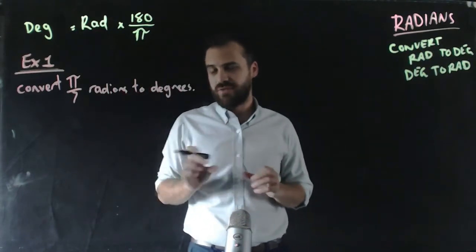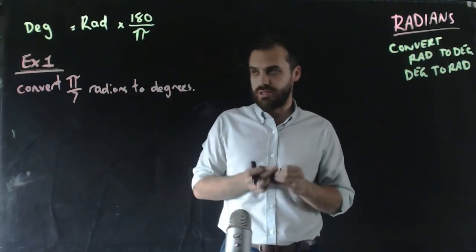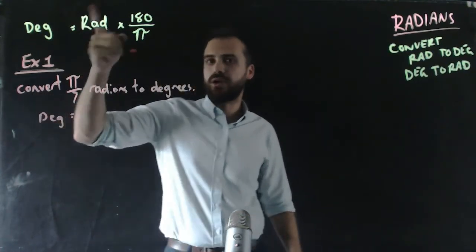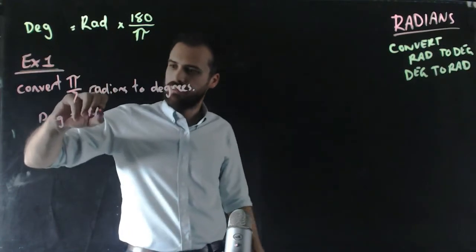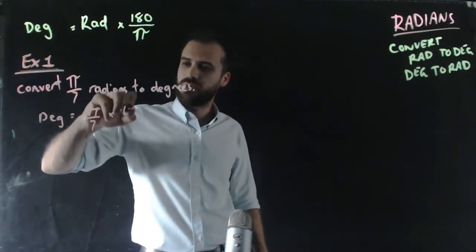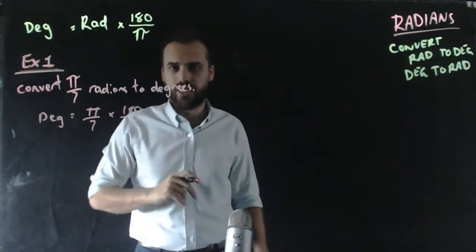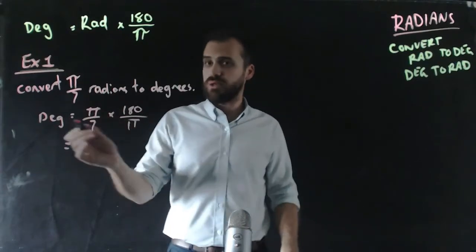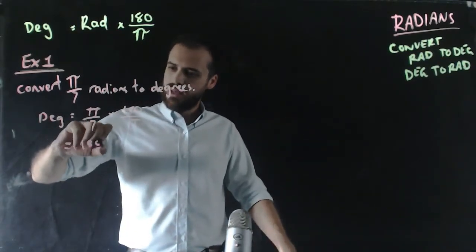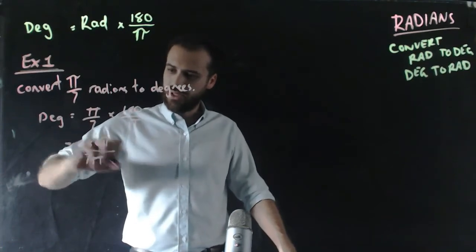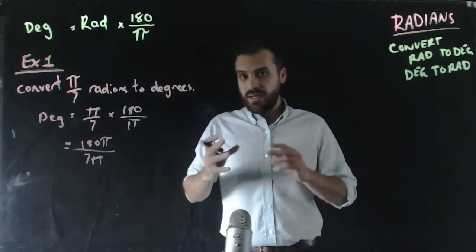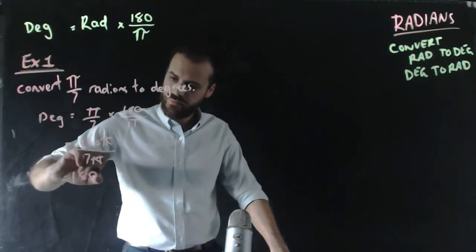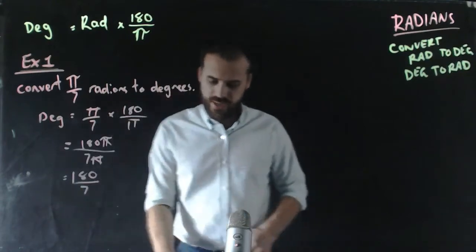We're asked to convert π/7 radians to degrees. Using our formula, degrees equals the radian measure, π/7, times 180/π. When you multiply fractions, top times top, bottom times bottom, we end up with 180π over 7π. You should see that those π's, top and bottom, will cancel out, leaving 180 over 7.